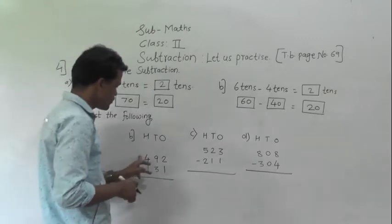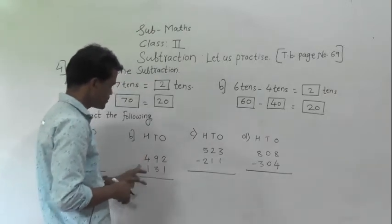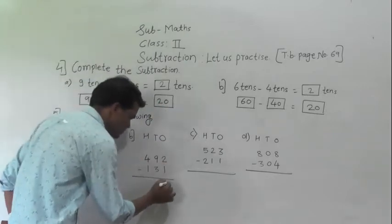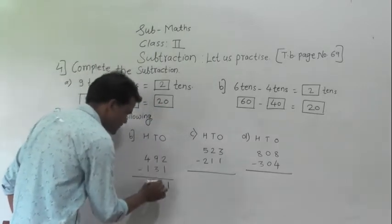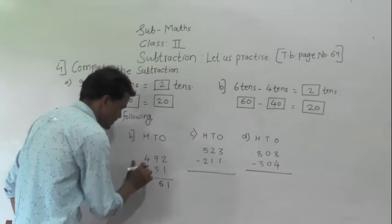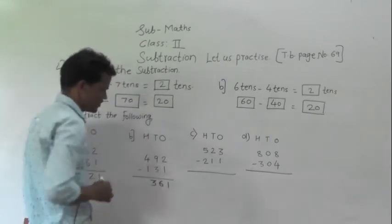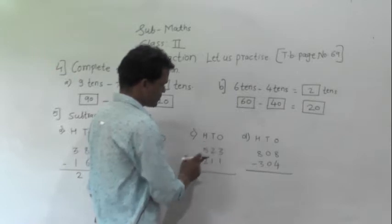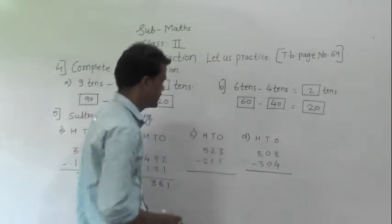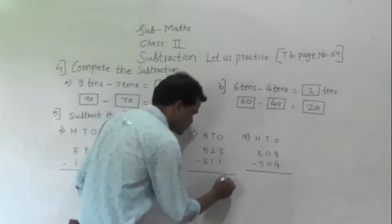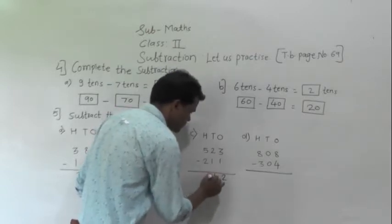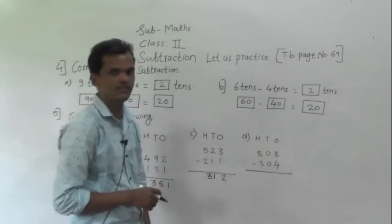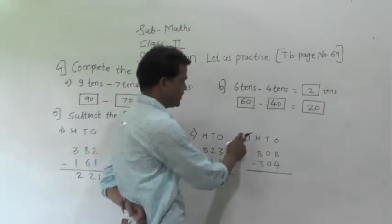Next example: 492 minus 131. 2 minus 1 is 1, 9 minus 3 is 6, 4 minus 1 is 3. Answer is 361. Next example: 523 minus 211. 3 minus 1 is 2, 2 minus 1 is 1, 5 minus 2 is 3. So 312 is the answer.